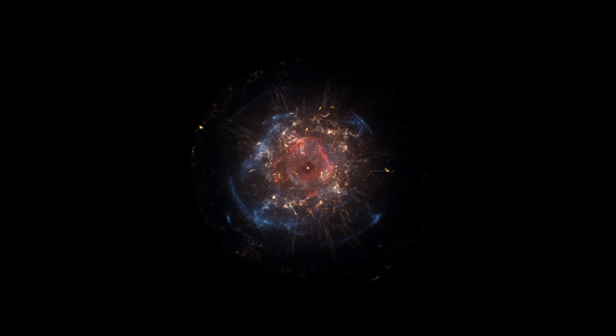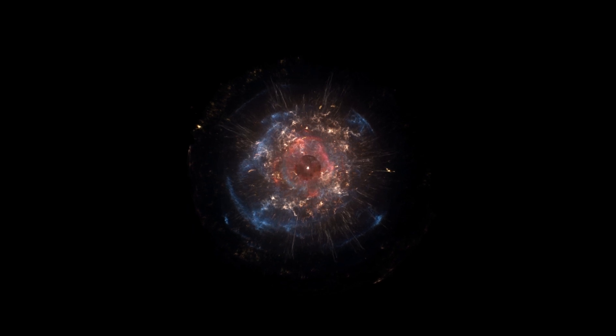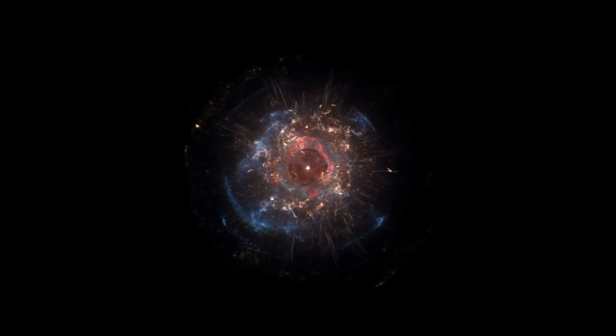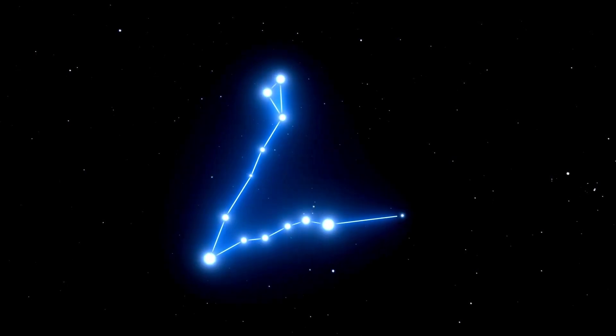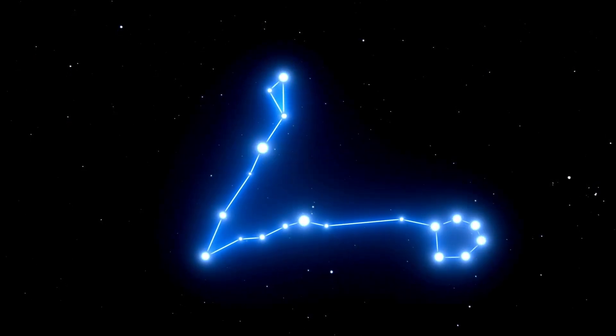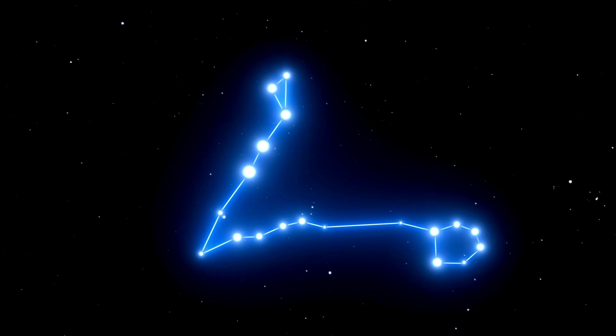When and why might a supernova happen? And will it have disastrous consequences for Earth? Let's look into it. The brilliant, ruby red star Betelgeuse is located in the upper right shoulder of the winter constellation Orion, the hunter.